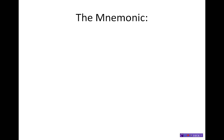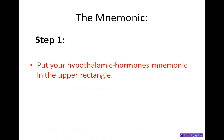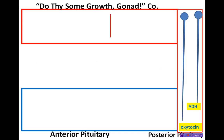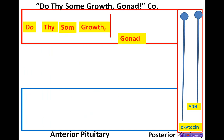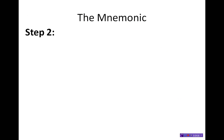Now, the mnemonic. Step one: put your hypothalamic hormones mnemonic in the upper rectangle. So here we go — notice I put a comma after 'growth' to remind me to put a vertical line there: 'Do Thy Some Growth, Gonad Company.'